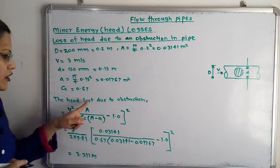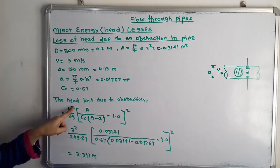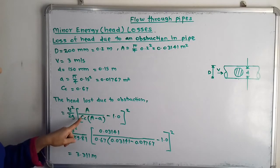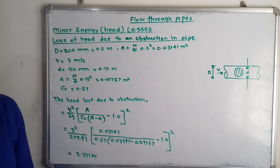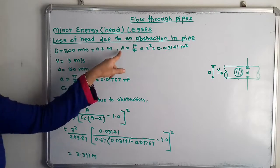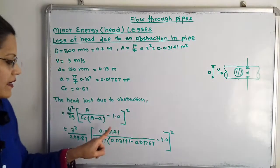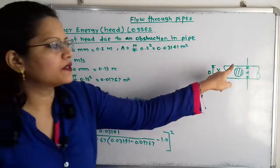Head loss due to obstruction equals V²/2g multiplied by [A/(Cc(A-a)) - 1]². Here capital A is the area of pipe and small a is the area of the obstruction.